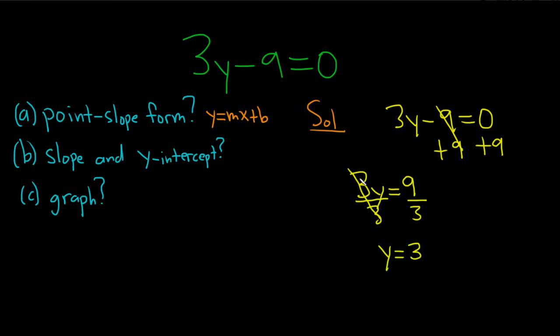I say, wait a minute, this is not in the form mx plus b. Ah! But it is. We can write this as 0x plus 3, right? Because 0x is 0, so you could do that. And so now we've technically written it in the form y equals mx plus b.